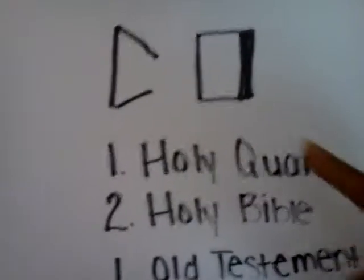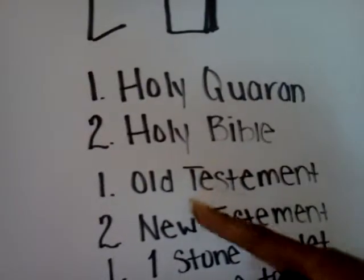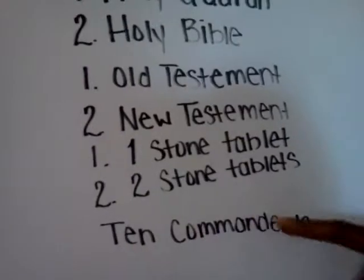We took one stripe, put it here. We took the other stripe, put it here. I gave you the Holy Quran and the Holy Bible, or I gave you the Old Testament and the New Testament, or I gave you one stone tablet, two stone tablets, which is the Ten Commandments.